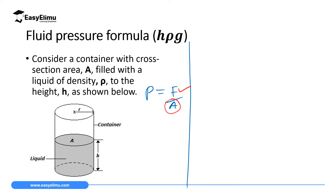Remember, among the three states of matter, liquids don't have a definite shape — they assume the shape of the container in which they are placed. So what we are going to do is place our liquid inside a container whose cross-sectional area we know — in this case a cylinder with cross-sectional area A. The liquid takes a height h, and we calculate the pressure the liquid exerts at the bottom of the container as force over area.